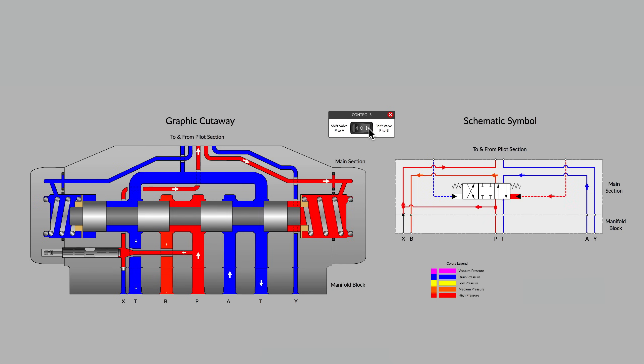And when our valve spool shifts to the left, we get P to B flow. Retract our cylinder. Turn our hydraulic motor in the counter-clockwise direction. So in basic terms, it's a simple spool valve.